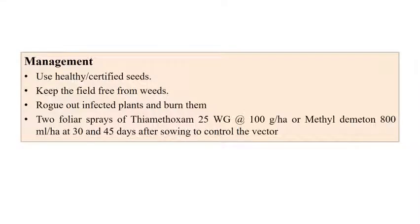Coming to the management aspects: use healthy and certified seeds, keep the field free from weeds, and rogue out and burn infected plant materials. Two foliar sprays with thiamethoxam 25WG at 100 grams per hectare or methyl demeton at 800 ml per hectare, applied 30 and 45 days after sowing, can control the vectors, because this is a viral disease.